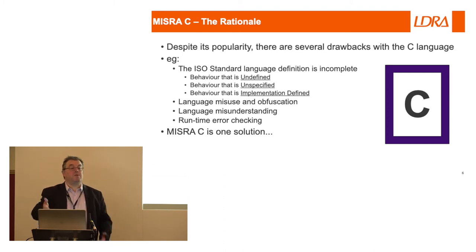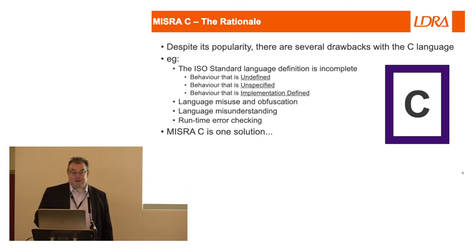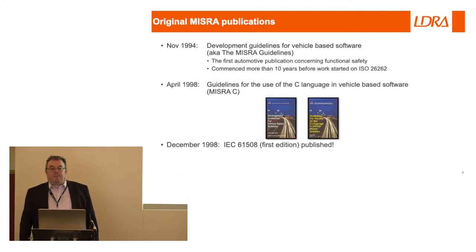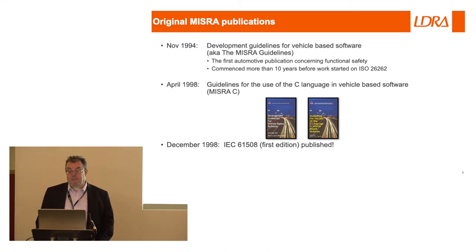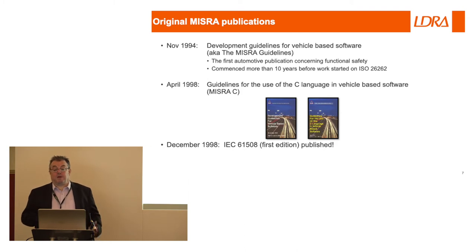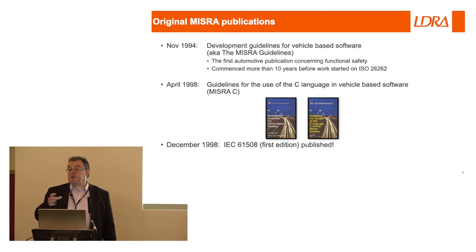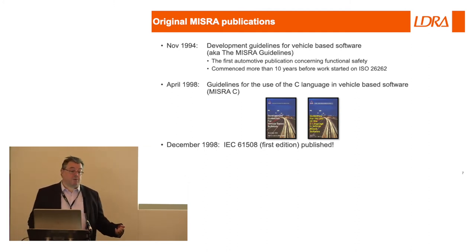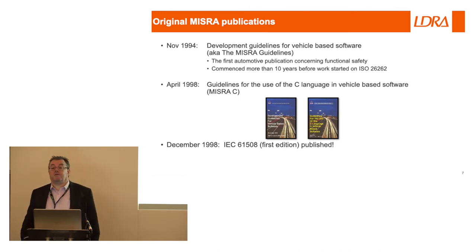So why are we using C if we've got all these problems? Some people — Rod Chapman's not here, he's normally here — say use ADA, and that is one option. Unfortunately there aren't that many ADA programmers out there, which is why we still use C. So what can we do about it? Well, we've got MISRA. A bit of ancient history: 1994, before my time, development guidelines for vehicle-based software. These are what are officially known as the MISRA guidelines. The MISRA group was actually formed at the same time as NRMI, the same government-funded project. That was published 1994, and 1998 MISRA C came along.